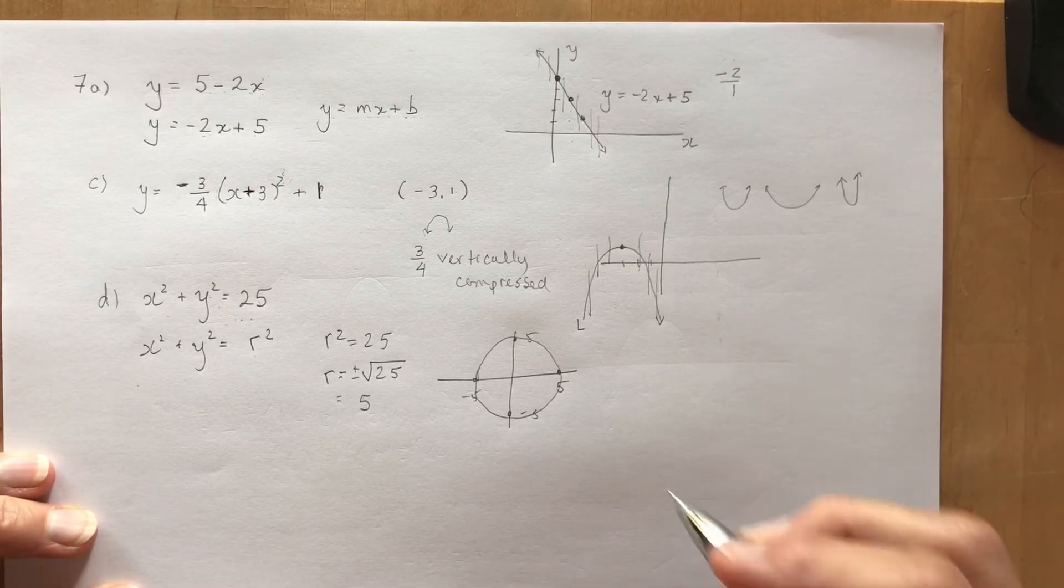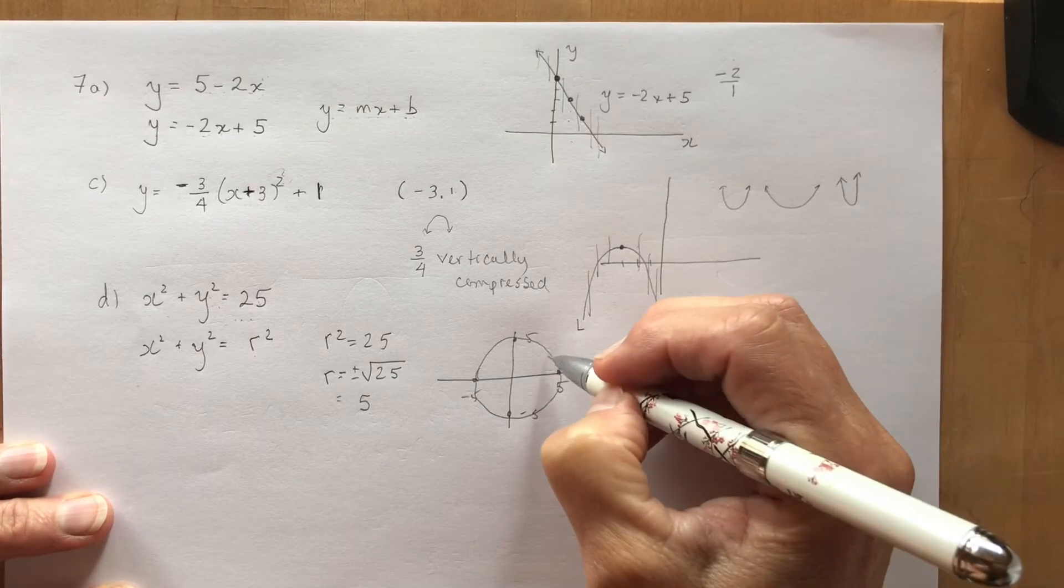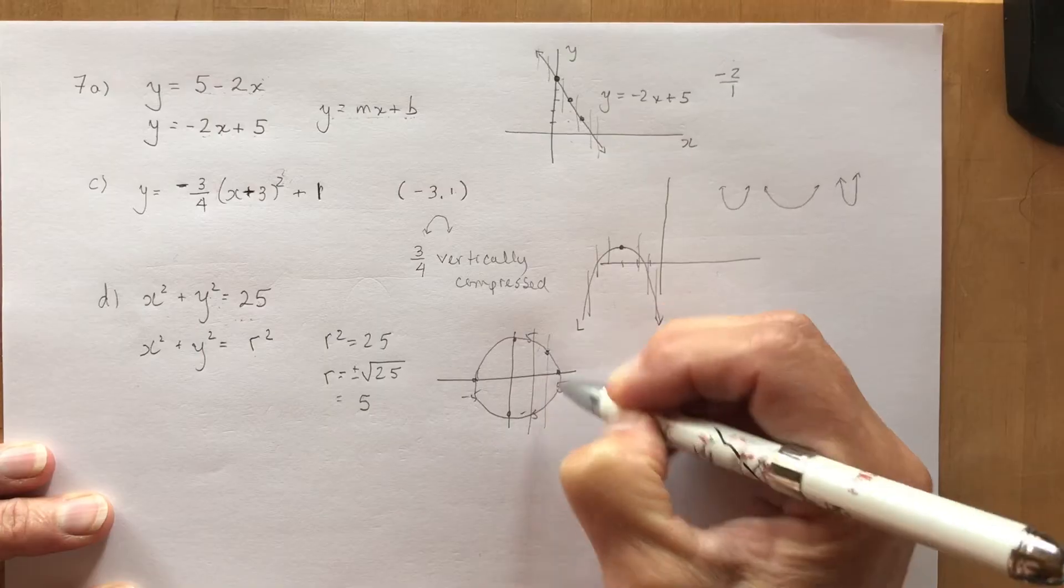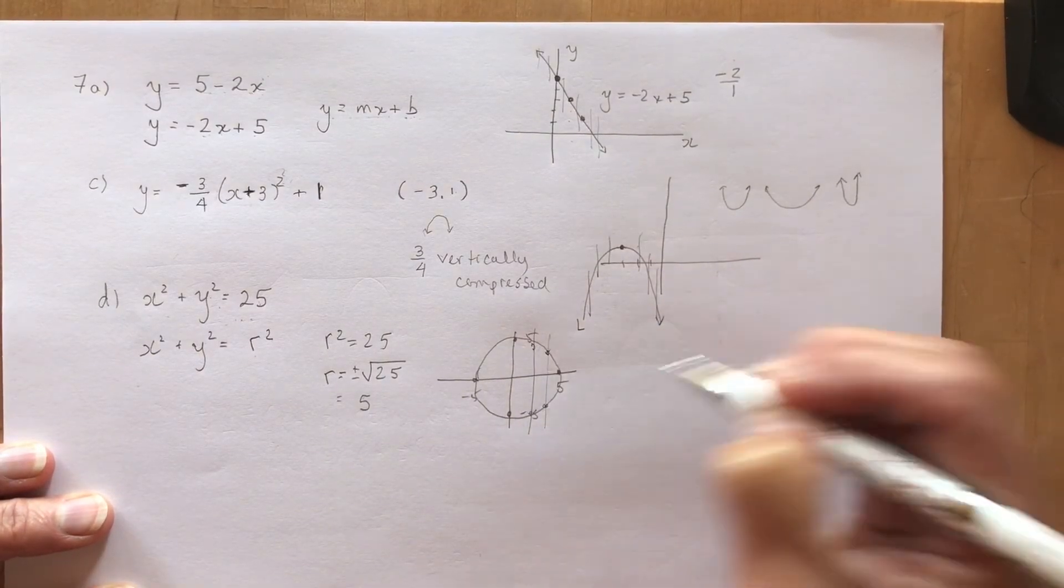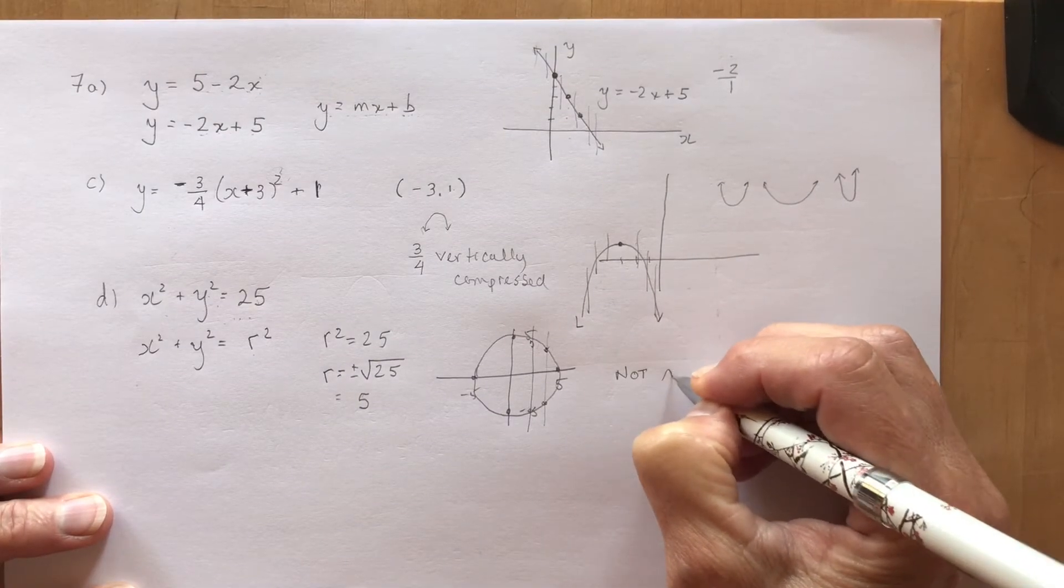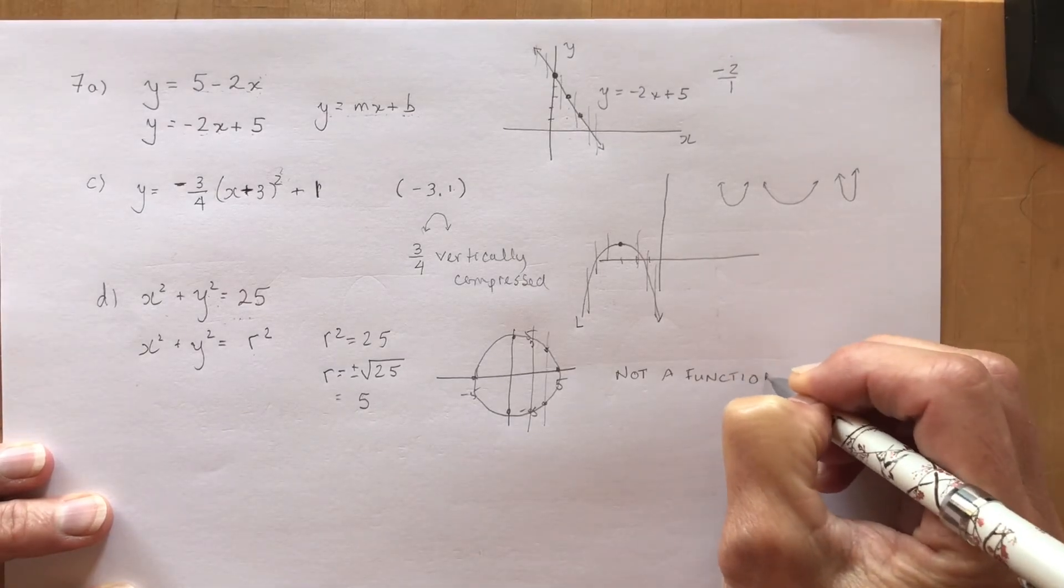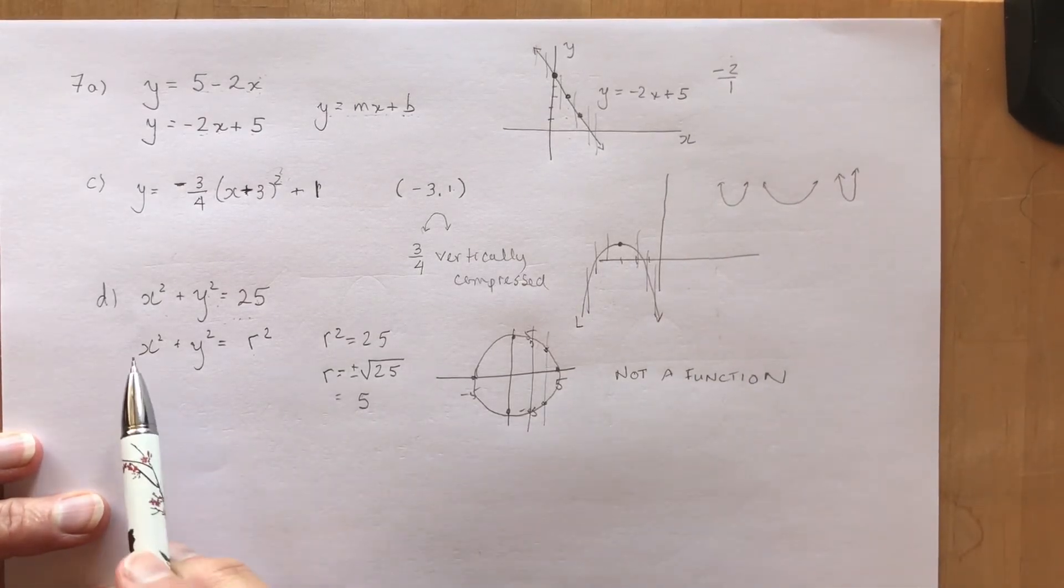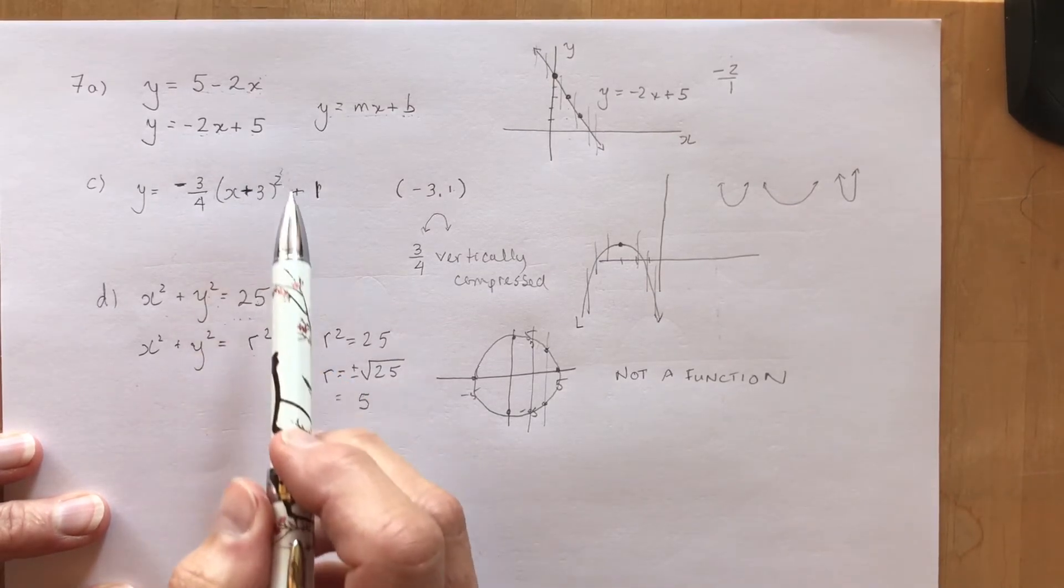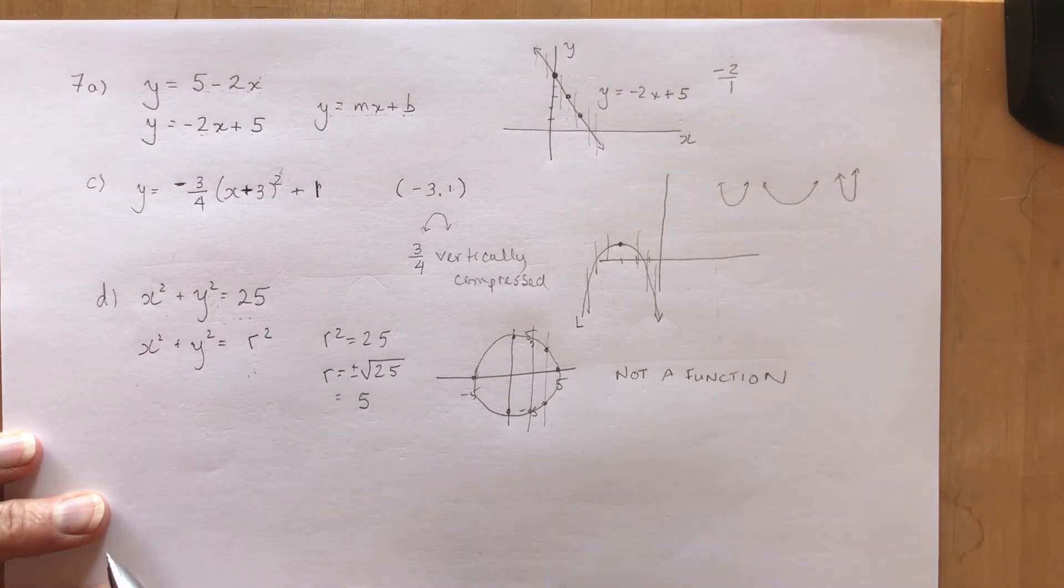Now the question is, is this a function? Well if you listened to section 1.1 you would have noticed that if I draw a vertical line here this is crossing at more than one point. So the answer is no, it is not a function. The trick to these questions was to recognize what type of functions you're dealing with: linear, quadratic, circle - the last one is not a function.